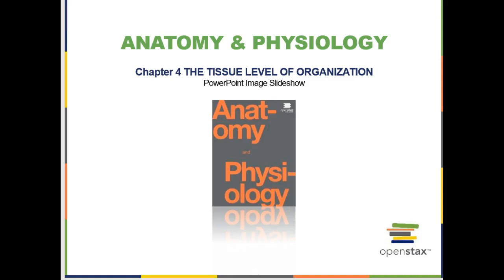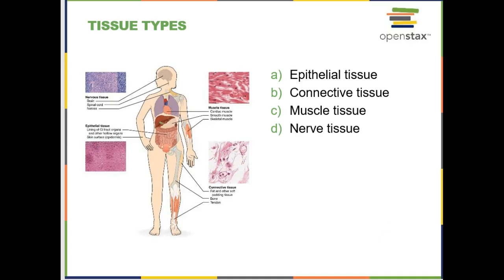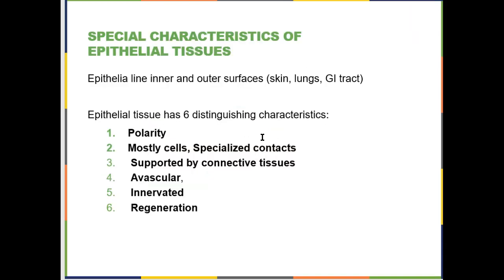Welcome to the Chapter 4 screencast on tissues. You have just four different classifications of tissue: epithelia, connective tissue, muscle tissue, and nervous tissue. Any little chunk you take out of the body is going to fall into one of these four categories. Some of these categories contain a number of different types of tissue, but they're all still classified together for sound biological reasons.